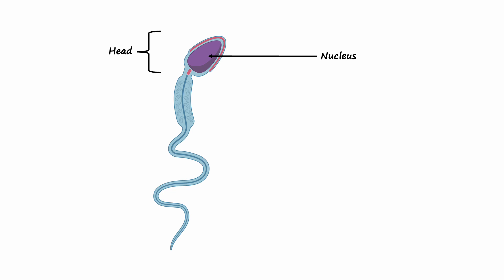Nucleus: The nucleus contains the genetic material, the DNA, which is passed on to the offspring. It's like a tiny library holding all the blueprints for the new life.